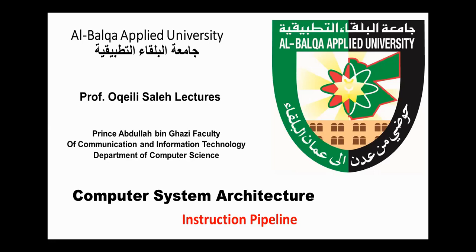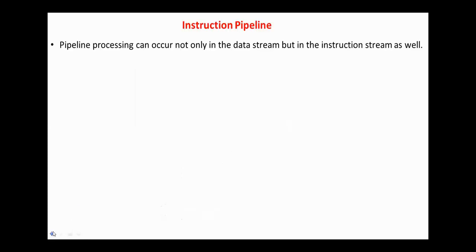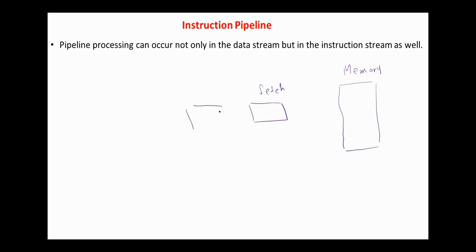Hello everyone, today we continue with the Computer System Architecture course and our topic is instruction pipeline. In the previous videos we discussed parallel processing, pipelining, and the last video was on arithmetic pipeline. Pipeline processing can occur not only in the data stream but in the instruction stream as well. The main three phases in the instruction cycle are fetch, decode, and execute.